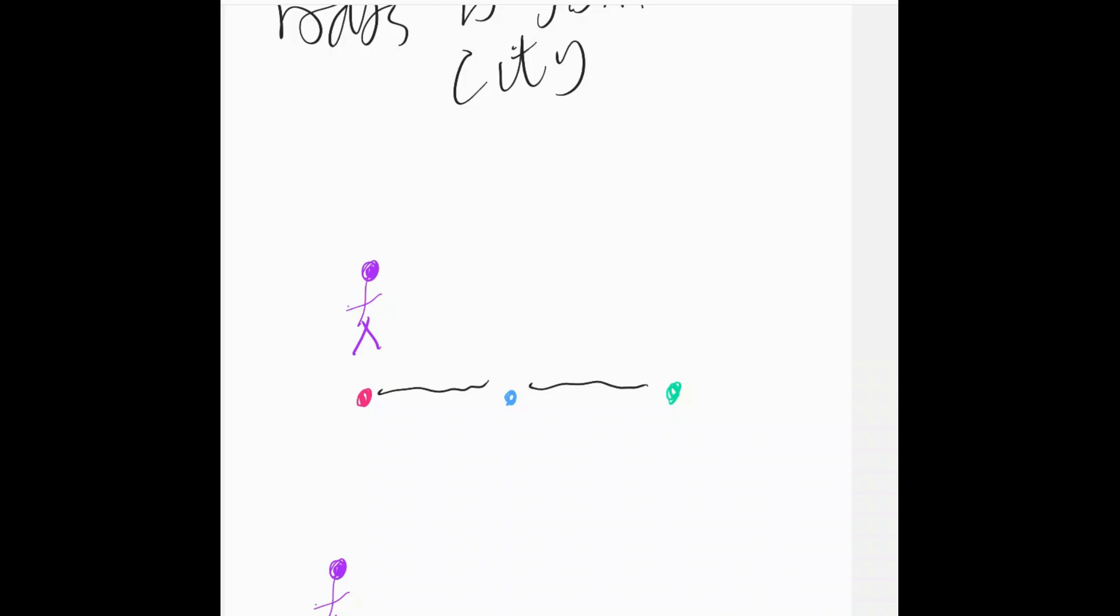And the different points of the root lattice are different points in n-dimensional space. So Z to the power of n, where n is the number of vertices on our graph. And there's also a certain dot product, which I've just described.